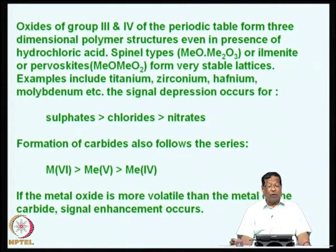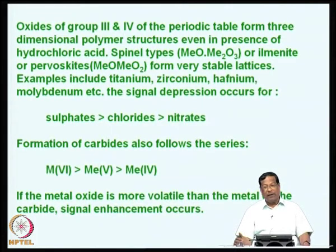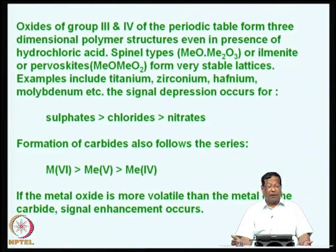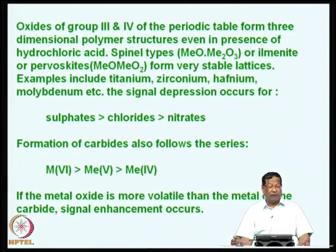In all these cases, signal depression occurs if the salts are of the type of sulphates, which gives maximum signal depression compared to chlorides, and that is much more than nitrates. The formation of carbides follows a similar series: fourth group elements give smaller signal depression compared to sixth group, fifth group, and that is much more than fourth group, that is valency 4.